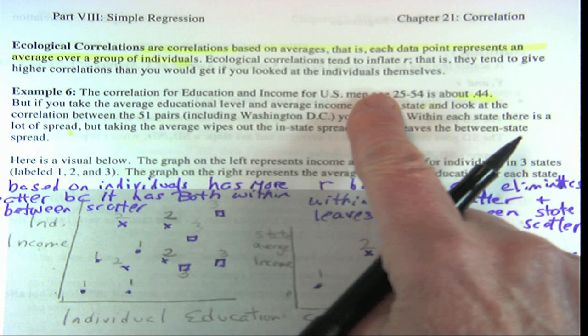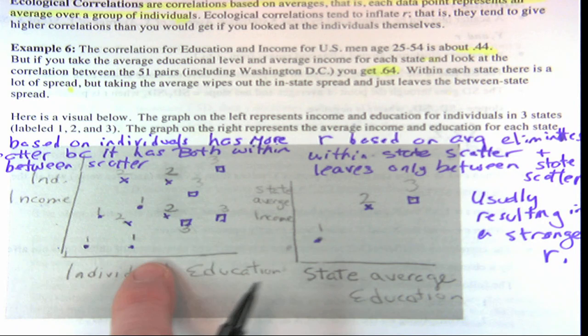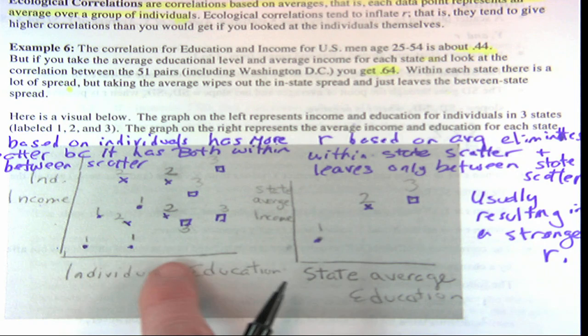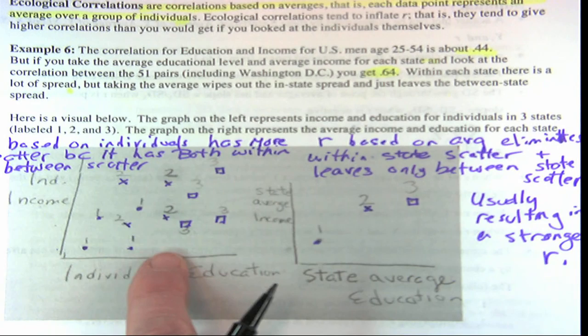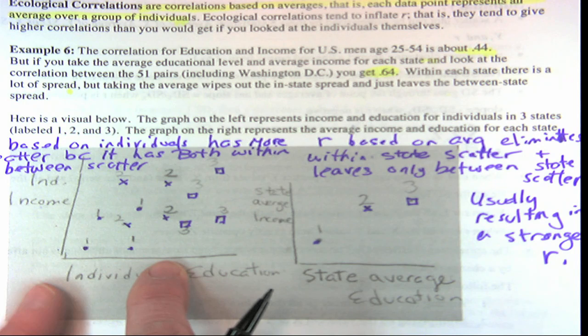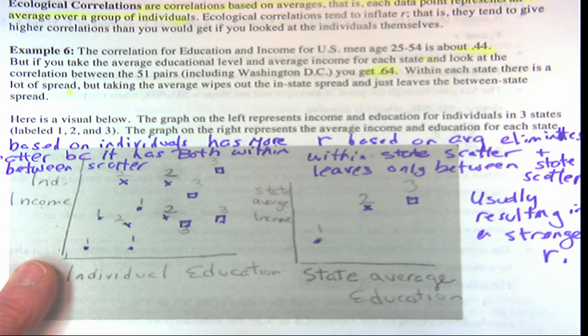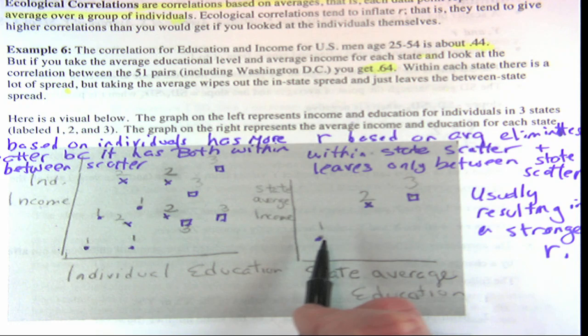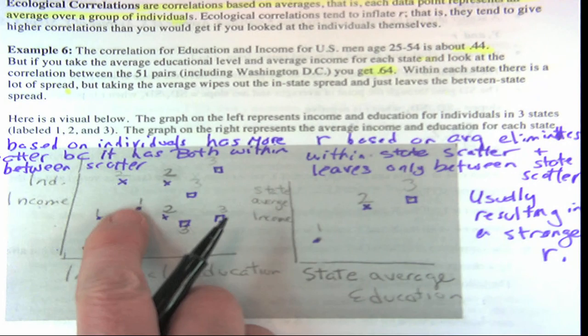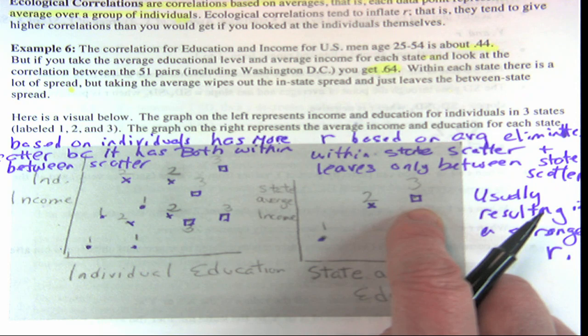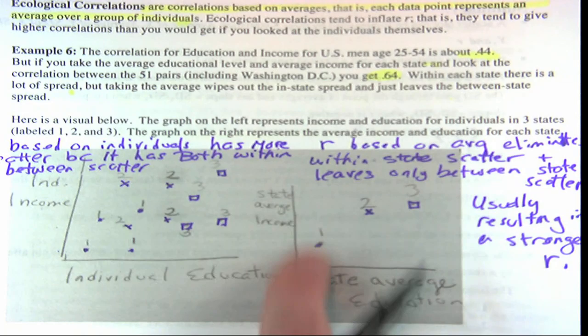Ecological correlations are correlations based on averages. What you're doing is condensing—like here's individual people's education and individual income. When you say everybody from the state average, these four people are from this state, and when you take the average, you remove the within-group scatter and you're just left with the between-group scatter. Now that we know analysis of variance, that makes a lot more sense. When you reduce that within-group scatter and just leave the between-group, you get a stronger correlation—not always, but usually.